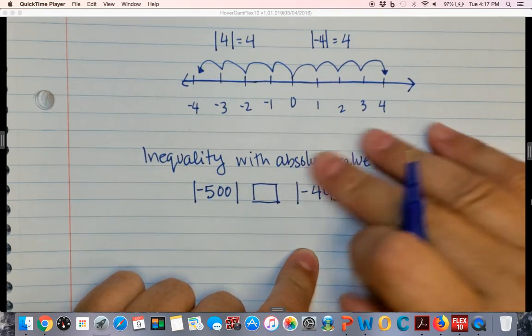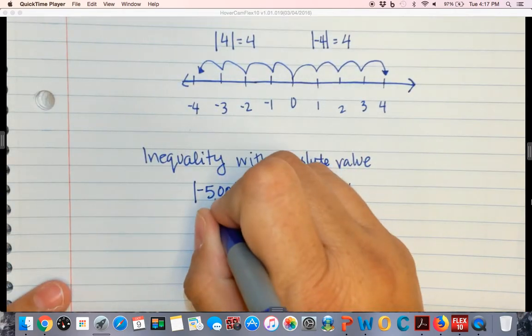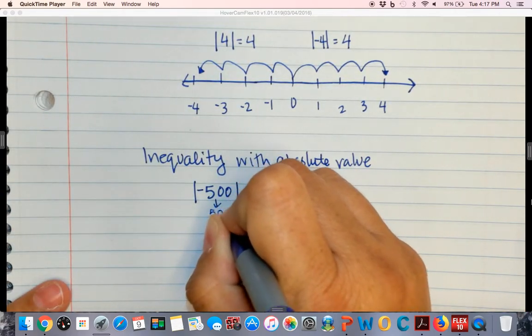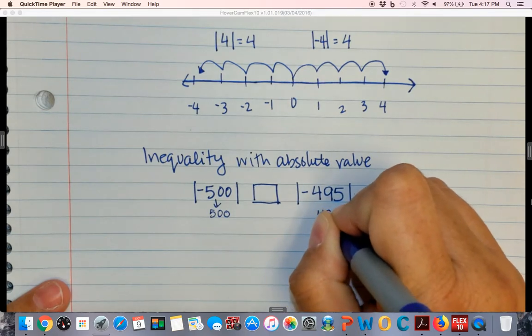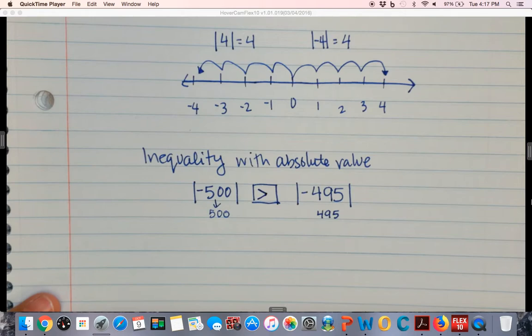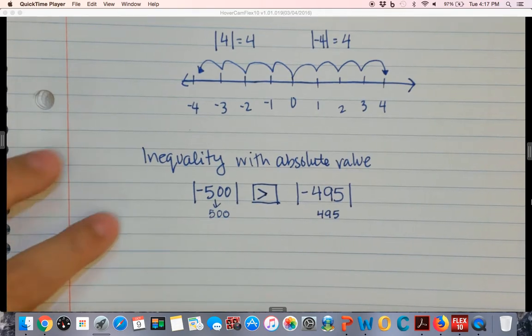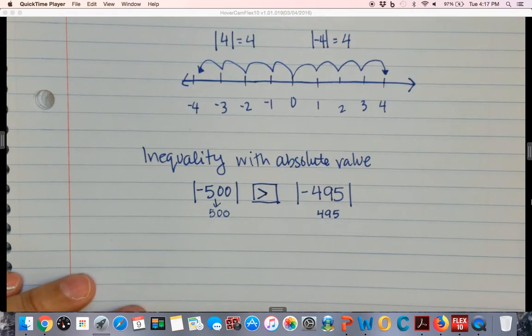However when we're talking about absolute value again these numbers change to positives. And we would have negative 500 absolute value greater than negative 495 and its absolute value. So keep that in mind as you'll be asked to be doing some inequalities.